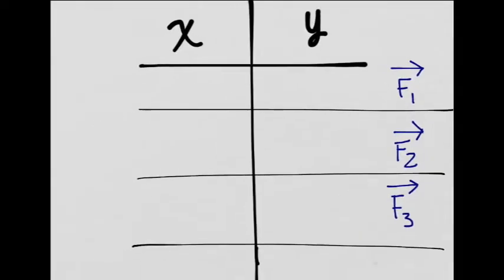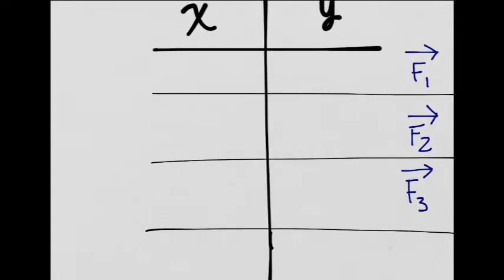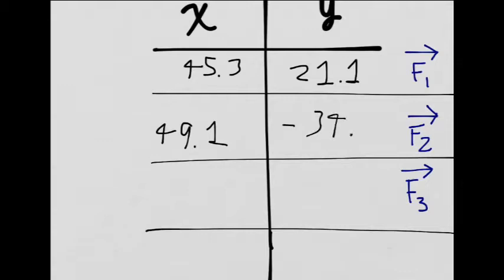Here we have a table for all of those values, so let's plug them in. 45.3, 21.1, 49.1, negative 34.4, negative 80, and 0.